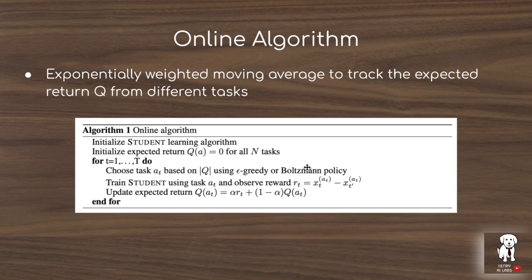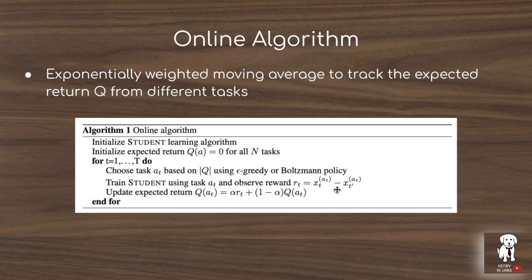Epsilon-greedy takes the action with maximum expected reward with probability epsilon, and with probability one-minus-epsilon samples uniformly from the other tasks. The Boltzmann policy differs in that sampling from non-maximum tasks is done according to a softmax-like distribution rather than uniformly. The reward signal is based on the difference in the student's performance since the teacher last selected that task, and the expectation is updated with a learning rate alpha times the current reward plus one-minus-alpha times the previous estimate.